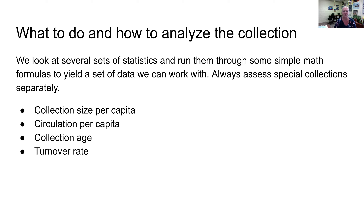The things we're going to look at are: collection size per capita, circulation per capita, collection age, and turnover rate.